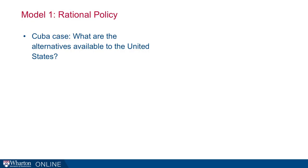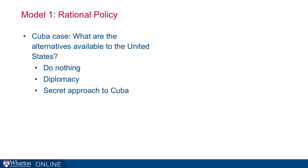This has been the default way of analyzing governmental behavior. In the Cuba case, the US had several options in responding to discovering missiles in Cuba: they could do nothing, use diplomacy, approach Cuba secretly to work out a deal, use a blockade (which is ultimately what they decided), use surgical airstrikes (probably the most heavily considered alternative), or conduct a full-scale invasion.